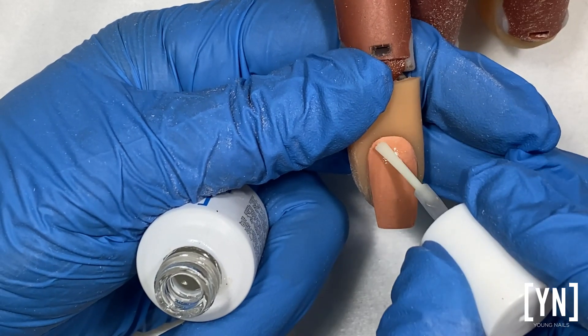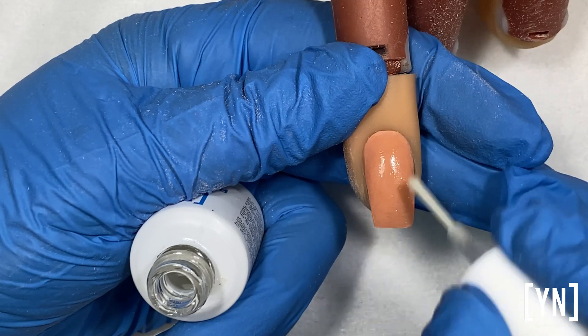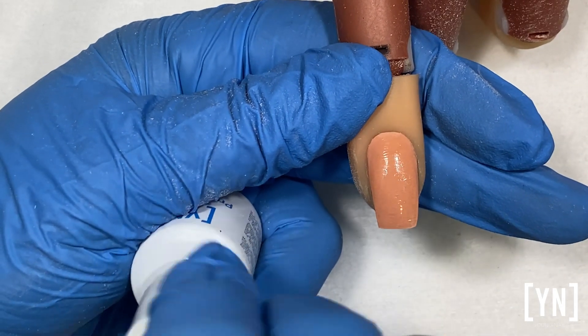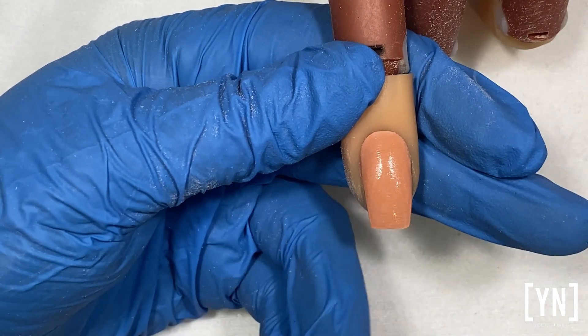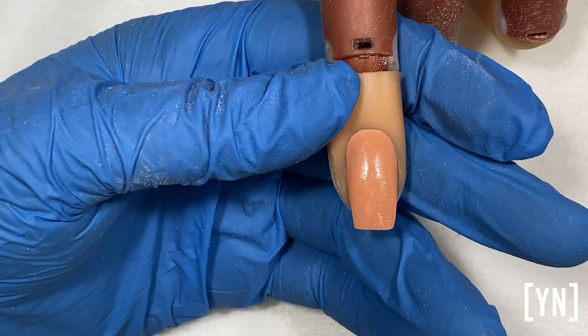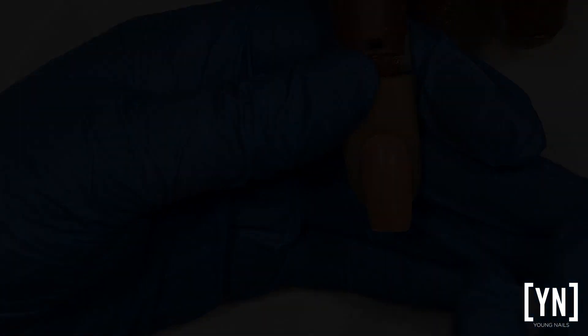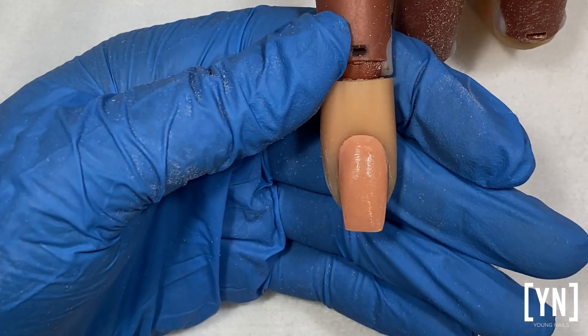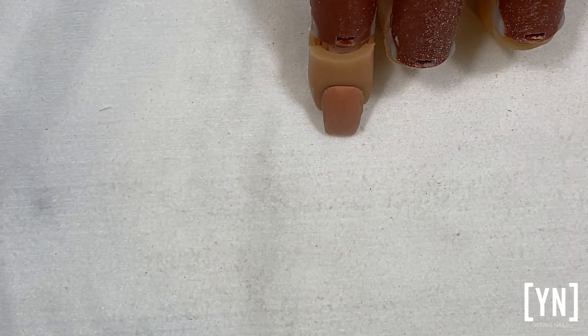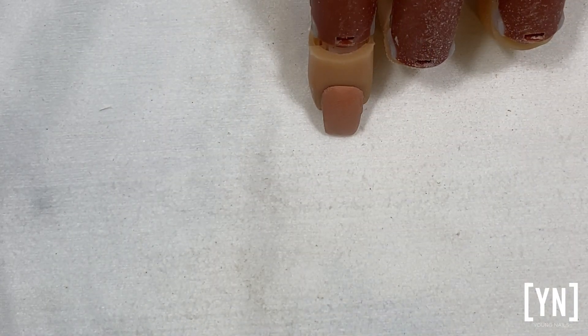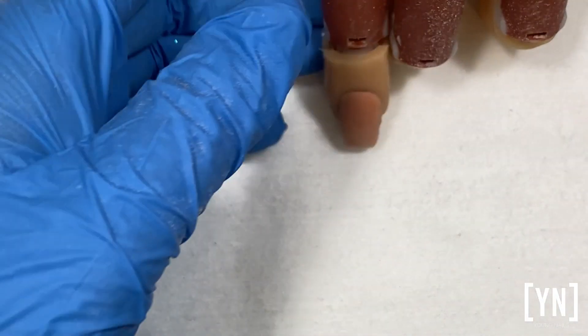So this is when I'm working on top of product, which means I've got acrylic or hard gel underneath. Okay, so today's color I'm using is Red 101.